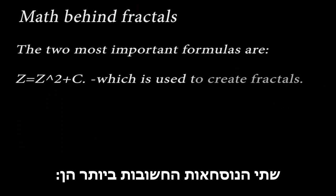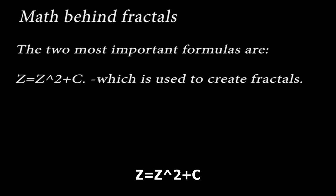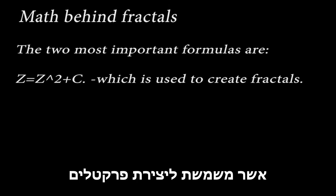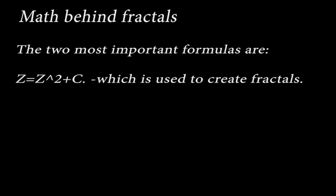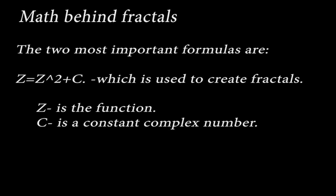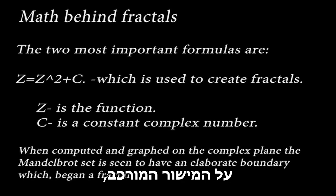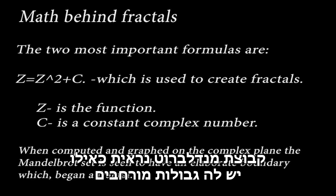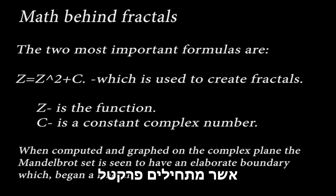The two most important formulas are z equals z squared plus c, which is used to create fractals. z is the function, and c is a constant complex number. When computed and graphed on the complex plane, the Mandelbrot set is seen to have an elaborate boundary, which forms a fractal.